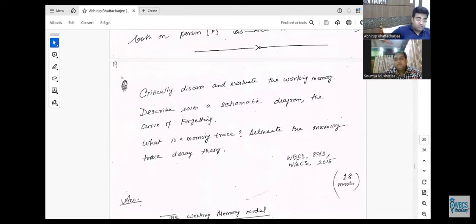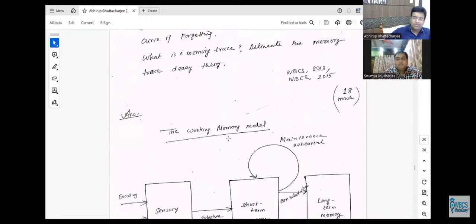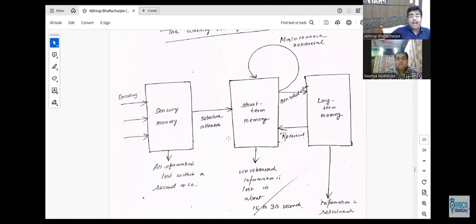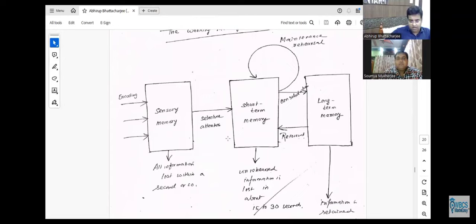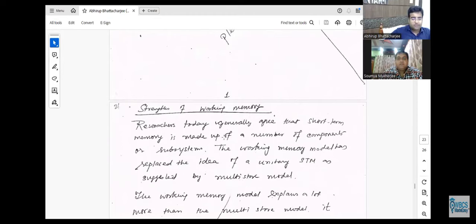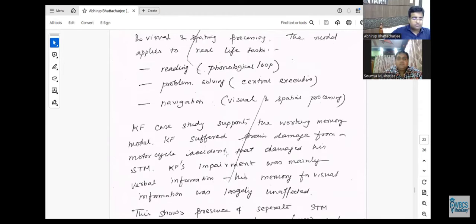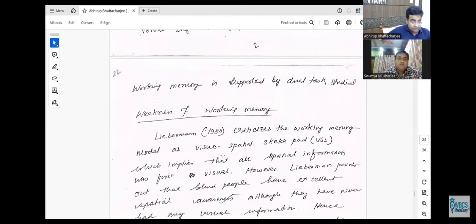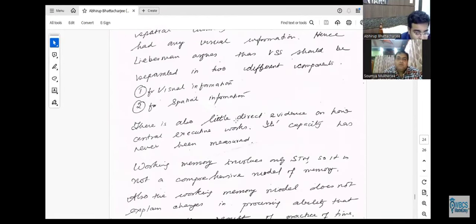Theories of forgetting, forgetting curve. What is memory trace? Delineate the theories of memory. Working model, Shifter working model. Character question, weakness of working memory.